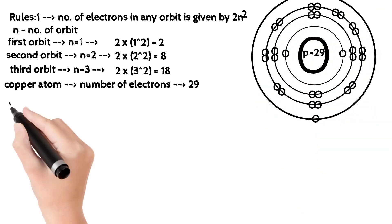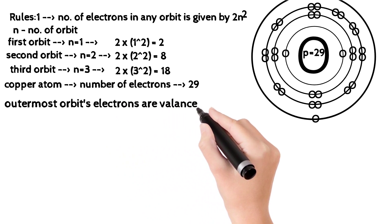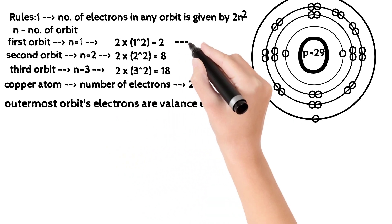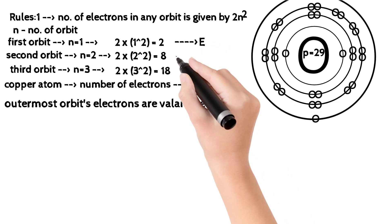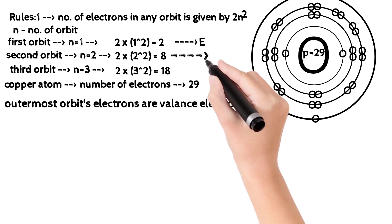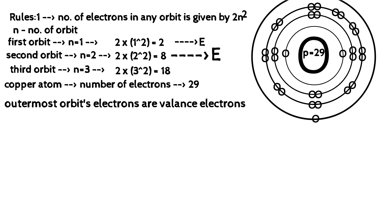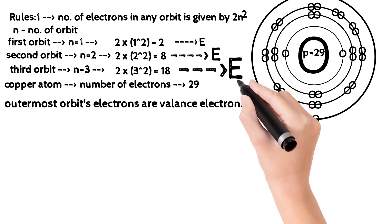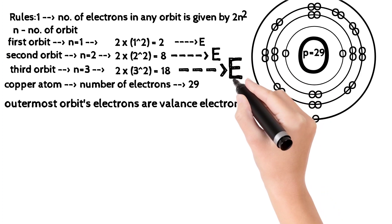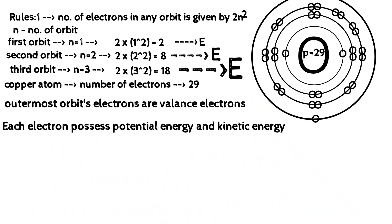Applying this rule to the copper atom, which has 29 total electrons: the first orbit holds 2, the second holds 8, the third holds 18, and the remaining 1 electron is in the outermost orbit.